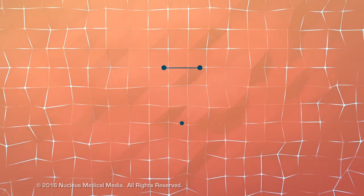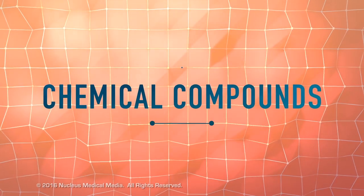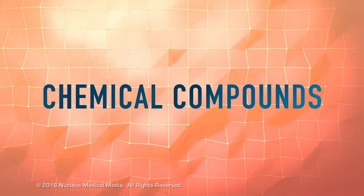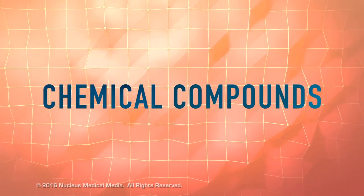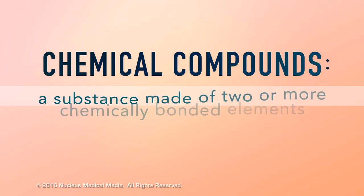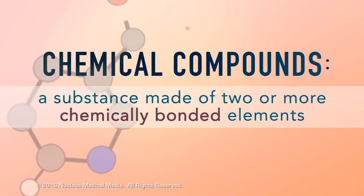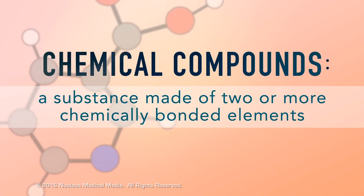Now that you've learned about atomic structure and elements, let's look at chemical compounds. A chemical compound is a substance made of two or more elements that are chemically bonded together in fixed proportions.